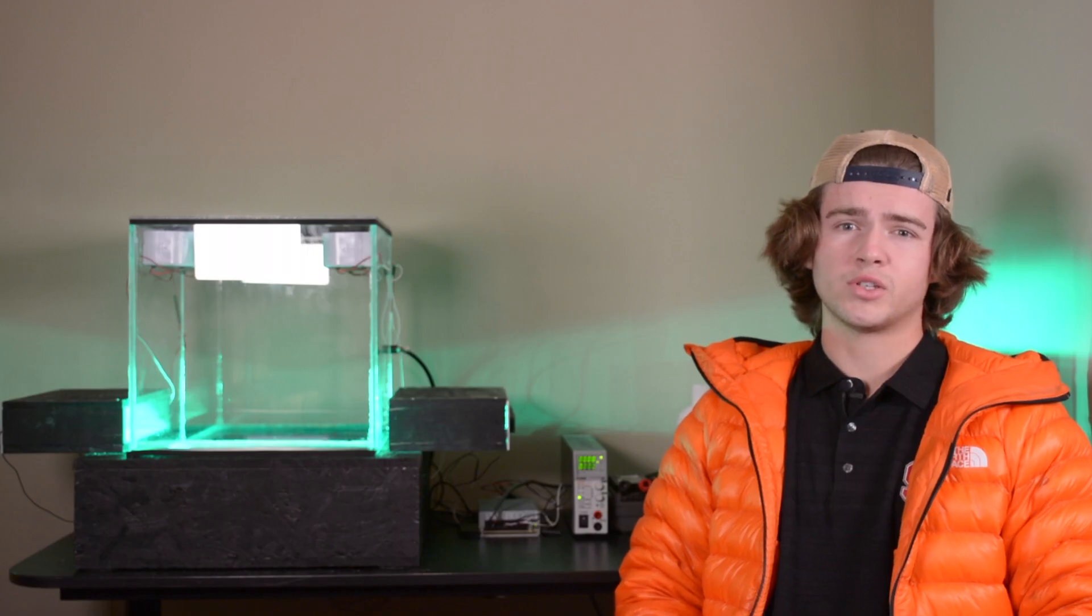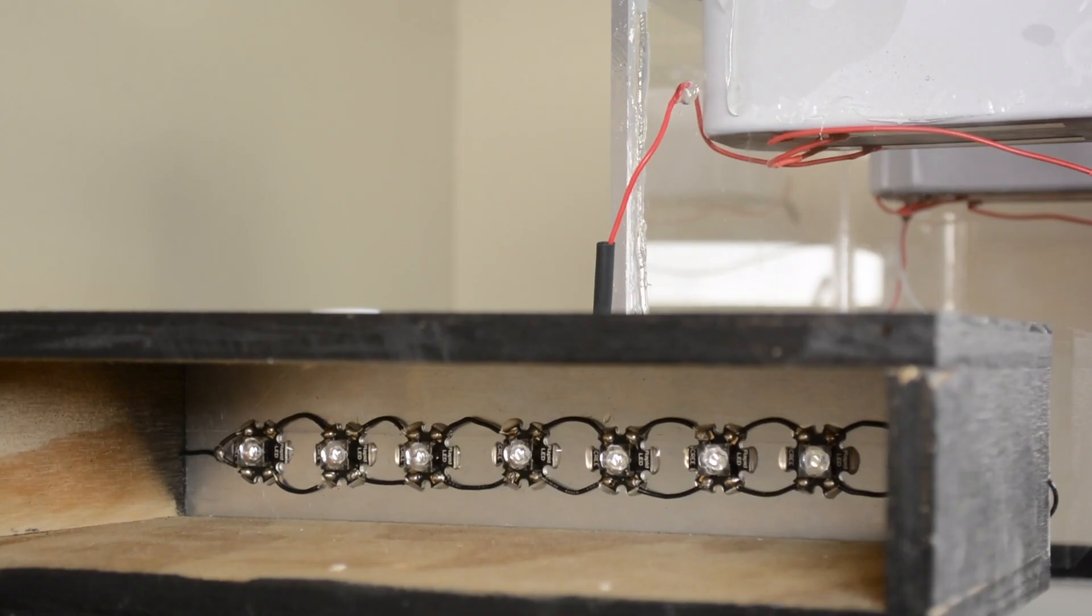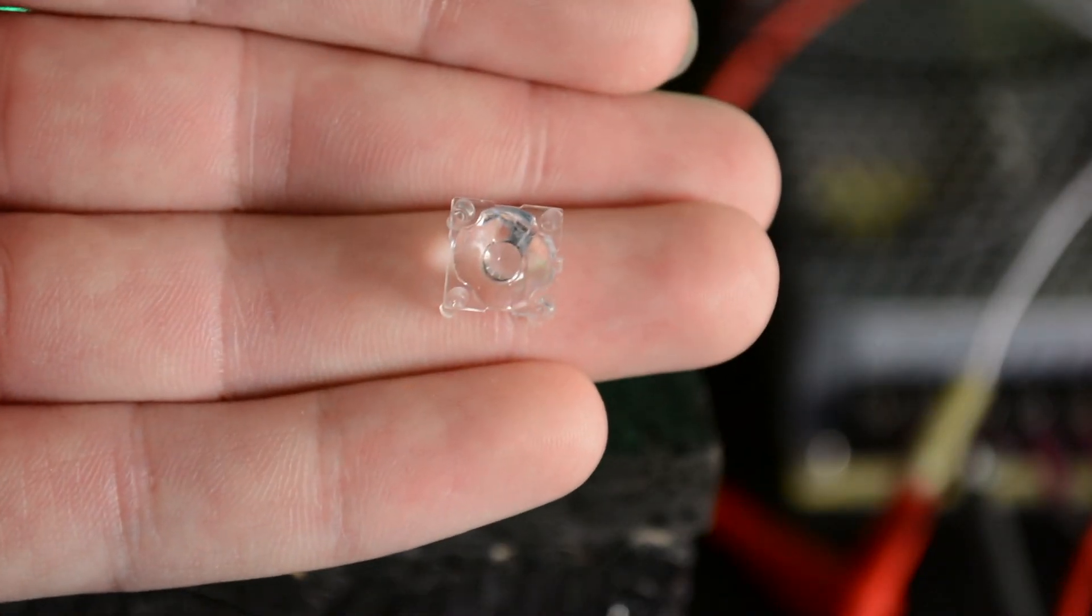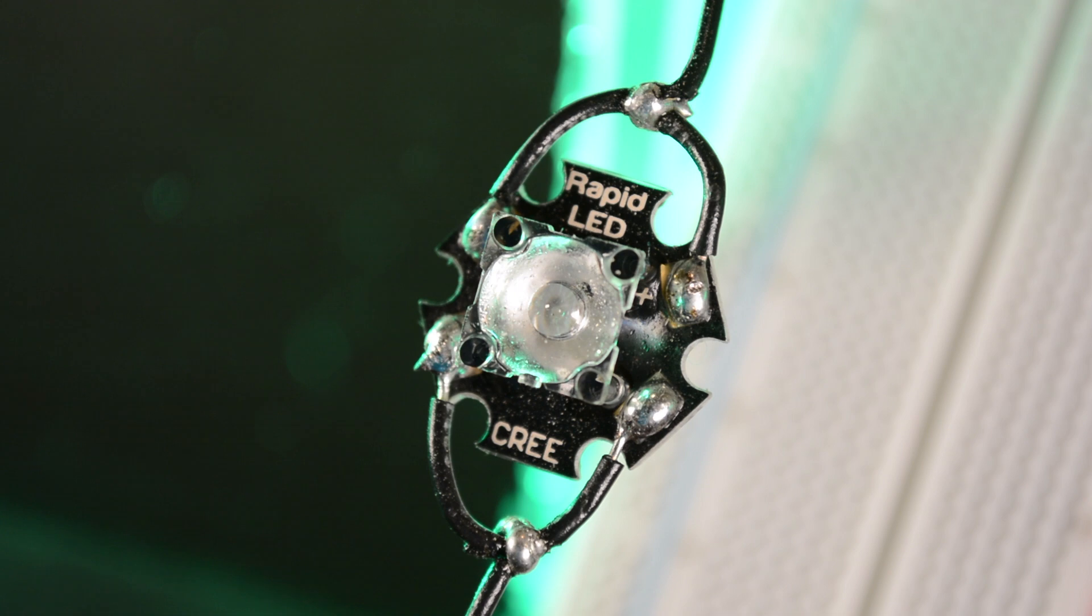Each array consists of eight LEDs and each LED is fashioned with a small plastic lens glued to it using a UV activated adhesive to reduce the angle of dispersion that the LEDs produce.